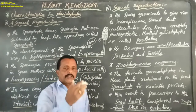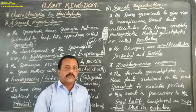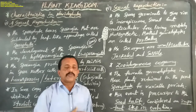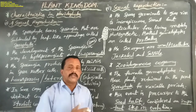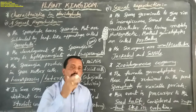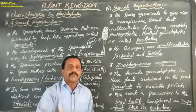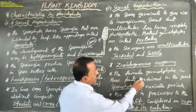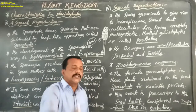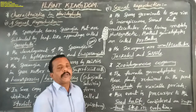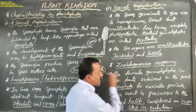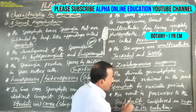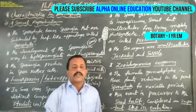In general, the male gamete fuses with the female gamete to form a diploid zygote. The diploid zygote undergoes mitosis to form a diploid embryo, and this embryo eventually develops into a seed. But the female gametophyte in these plants is retained on the parent sporophyte for variable periods. This event is a precursor to the seed habit and is considered an important step in evolution.